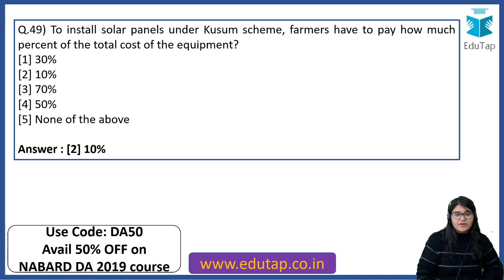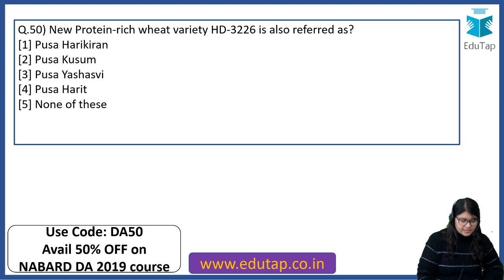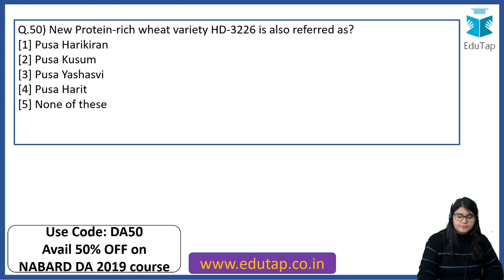I can see Priyanka Kumari also chipping in. Next, the 50th question: new protein-rich variety HD3226 is referred to as what? What is the name of this particular variety? The answer is Pusa Yashasvi.